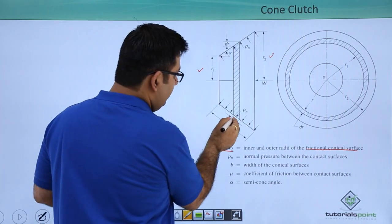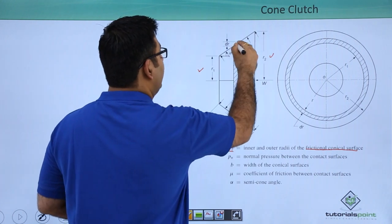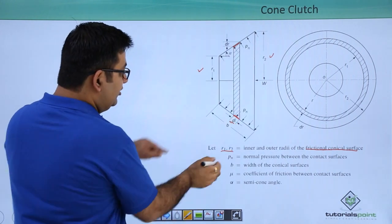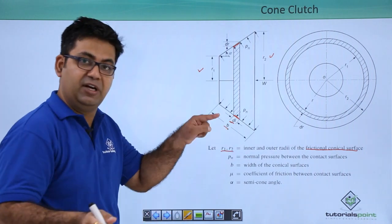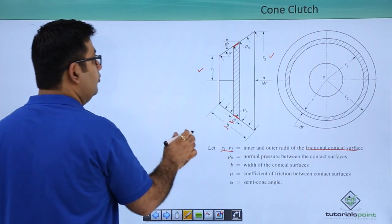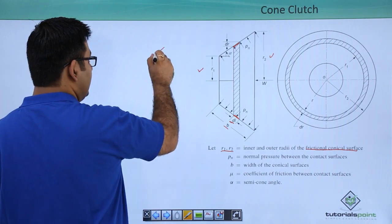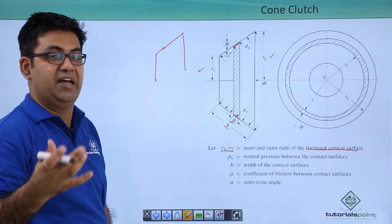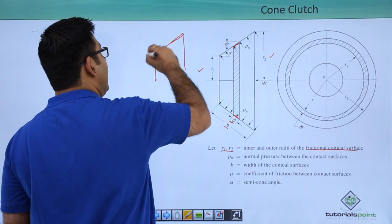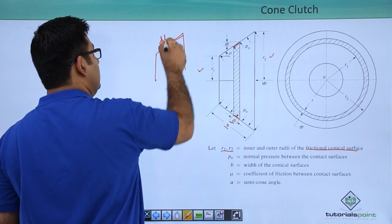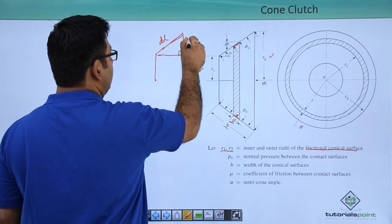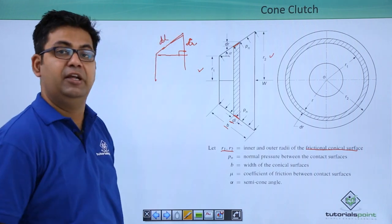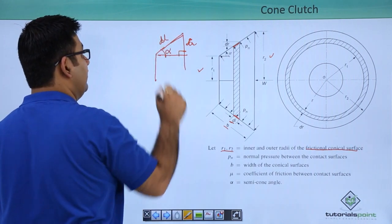The width of this is b, the total width of this is b. If you look at this, this is how it looks like in an enlarged fashion. So if this hypotenuse is dl, this perpendicular length is dr, that's the radial difference dr, and this angle is alpha.